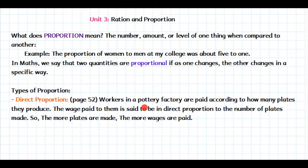So, imagine that here we have a direct proportion because when one quantity increases, the other quantity increases too. When the number of plates increases, the wage that the workers are going to receive increases also.